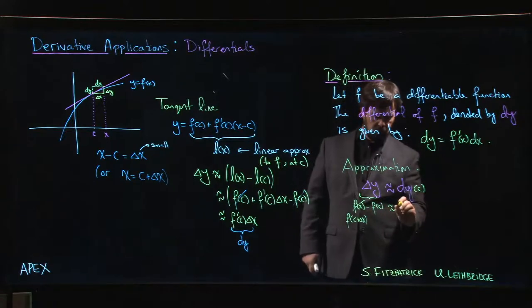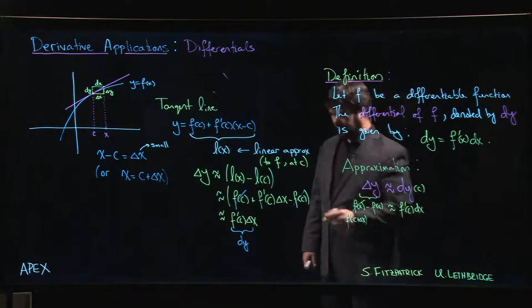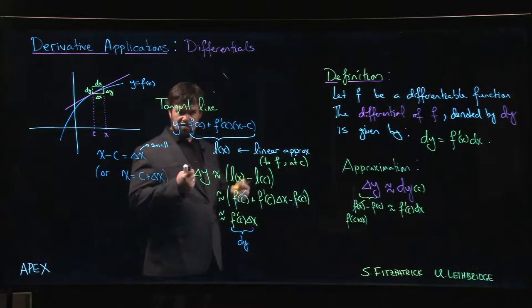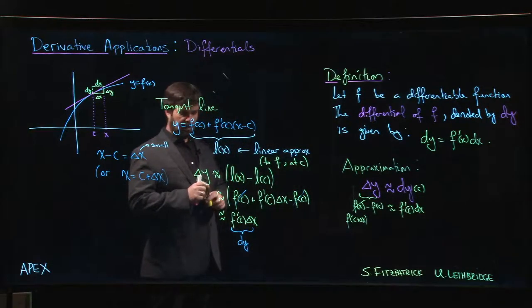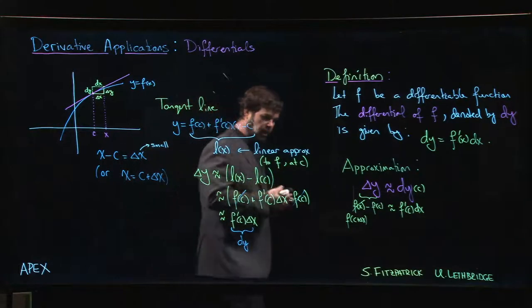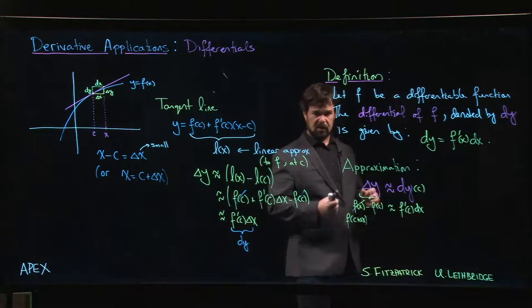...it is, according to our tangent line approximation, F prime of c times, well, you'll notice we write dx instead of delta x. This is something that a lot of people find a little bit frustrating. Why do you write dx and delta x, and those seem to be interchangeable, but dy and delta y, those are different.